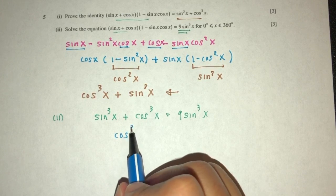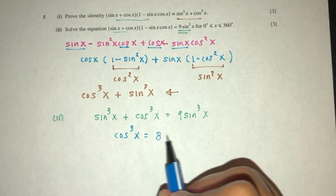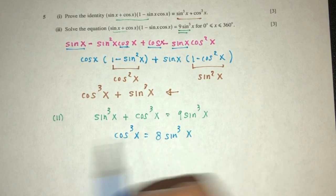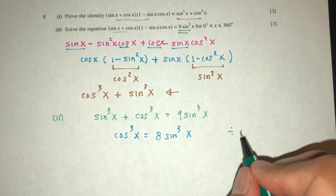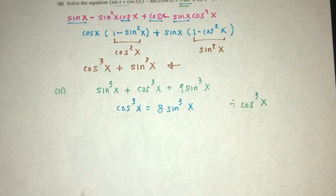Better, so that will be cos³x is equal to 8 sin³x. Now whenever you have sin and cos in the same equation, what do we do? We divide by cos. Cos³x in this case, that will become